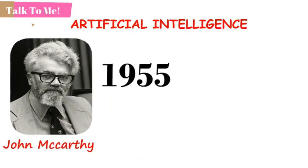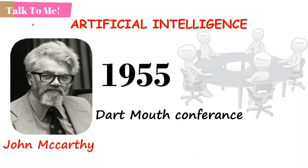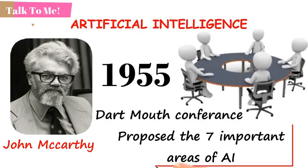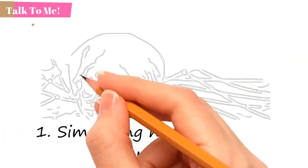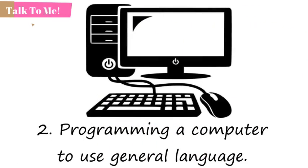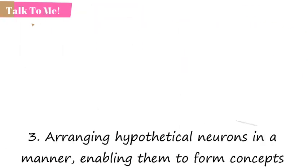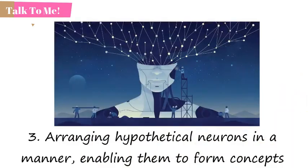He also proposed the seven important areas of AI, which were simulating higher functions of the brain, programming a computer to use general language, and arranging hypothetical neurons in a manner enabling them to form concepts.